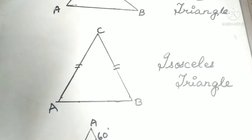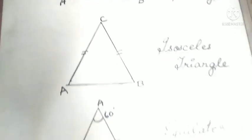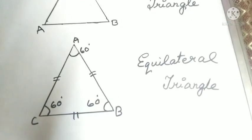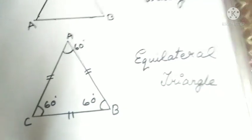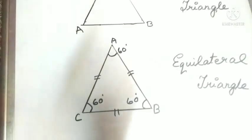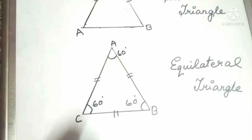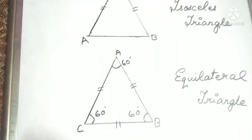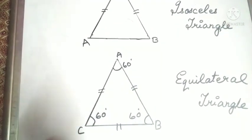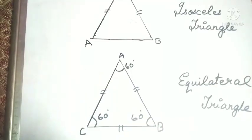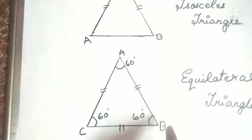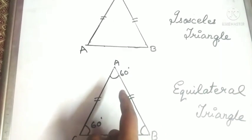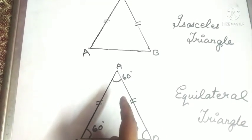Now we are going to learn what is an equilateral triangle. A triangle whose all three sides are equal is known as an equilateral triangle. In an equilateral triangle, the measure of each angle is 60 degrees.